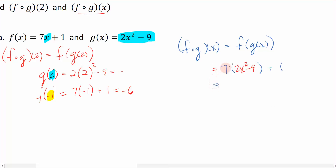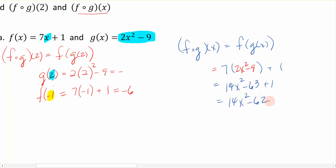So I'm going to distribute the 7 and remove the parentheses. This gives me 14x squared minus 63 plus 1, or in other words, 14x squared minus 62. This is the new function that was created when I composed f with g.